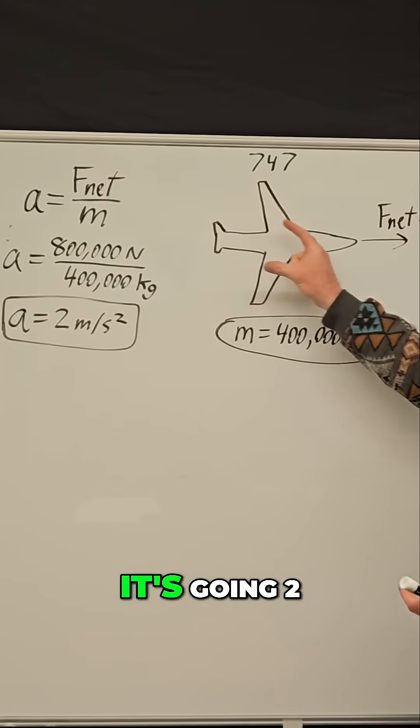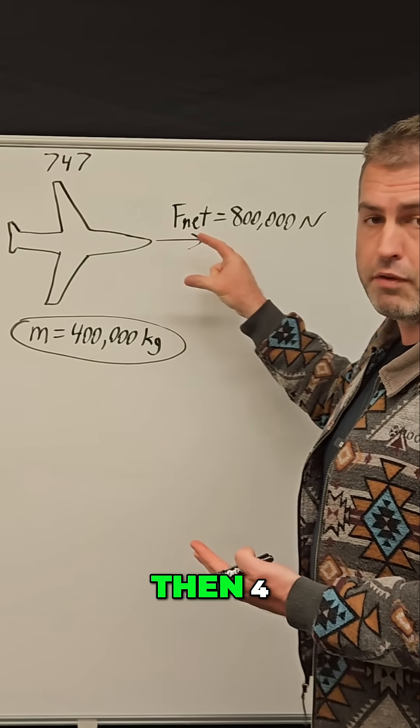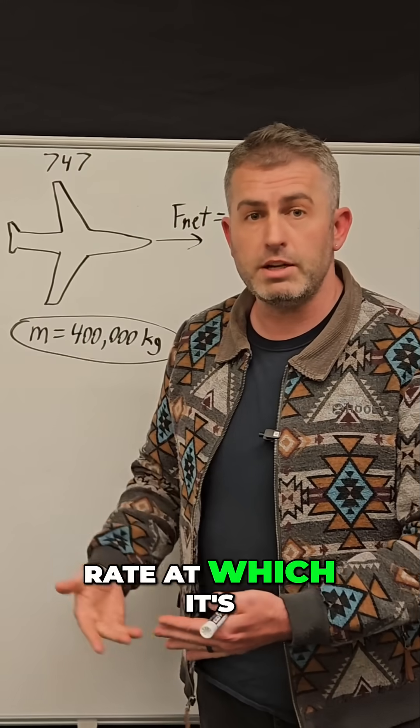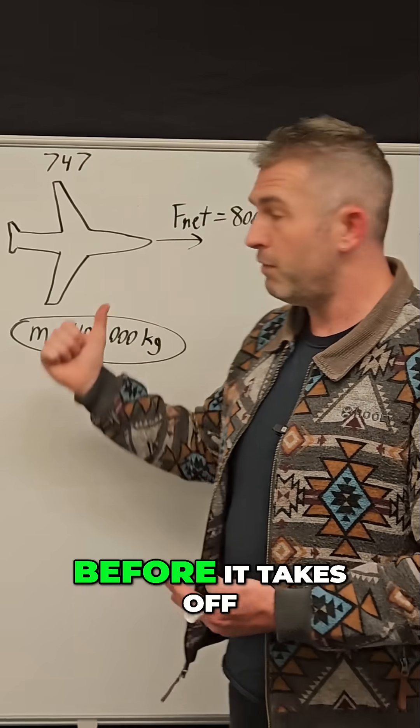So after one second it's going two meters per second, then four, then six, then eight. So this acceleration tells us the rate at which it's increasing its velocity before it takes off.